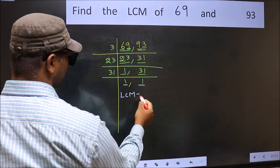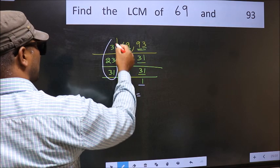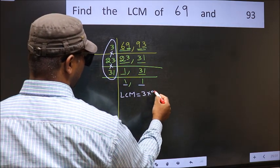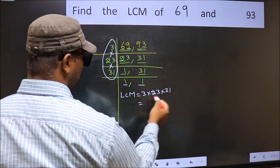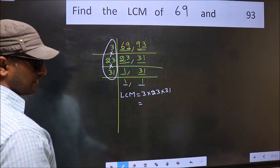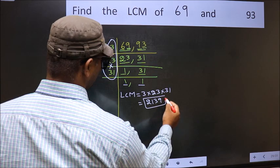So our LCM is the product of these numbers. That is 3 into 23 into 31. When we multiply these numbers, we get 2139 as our LCM.